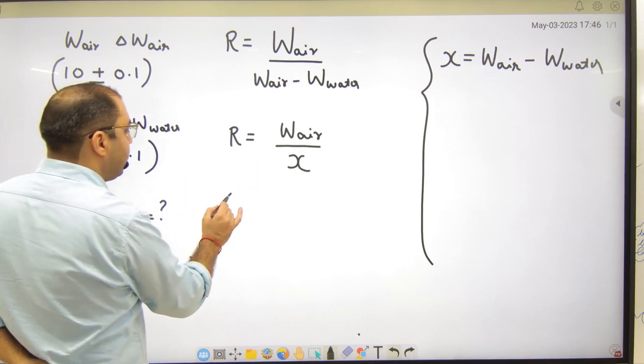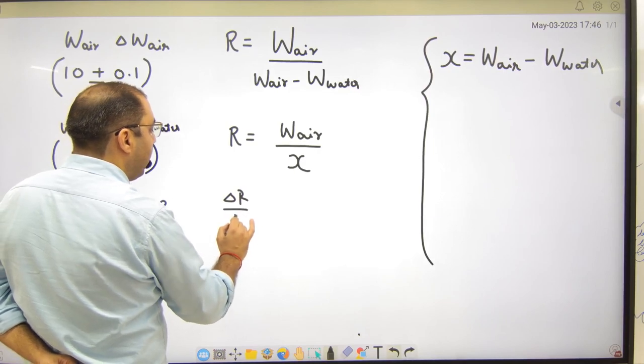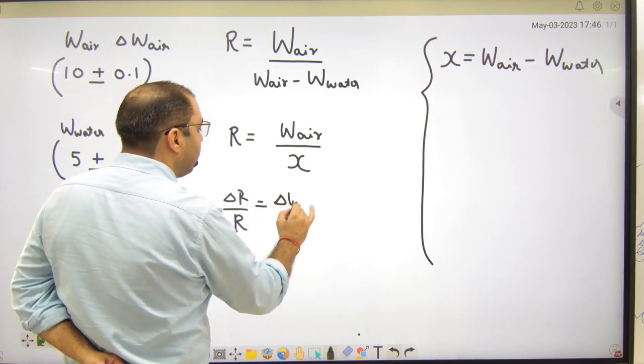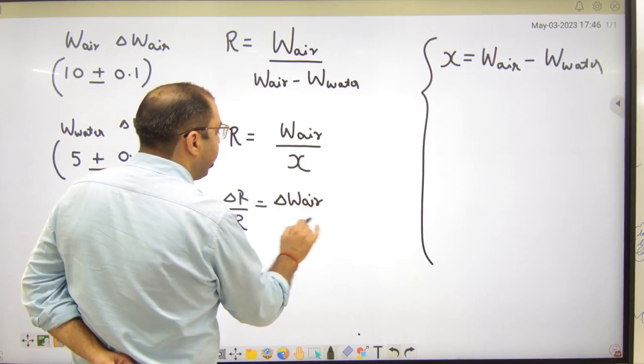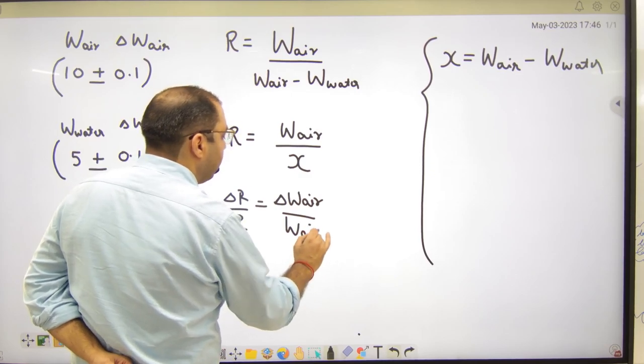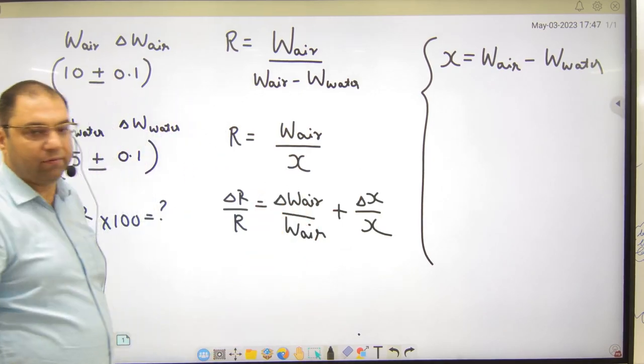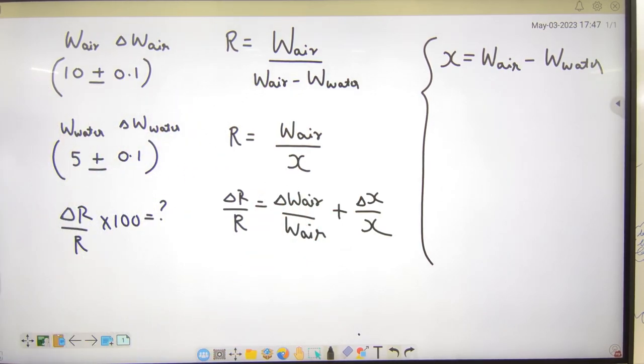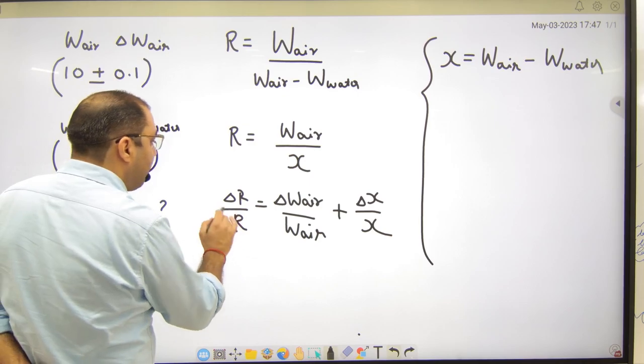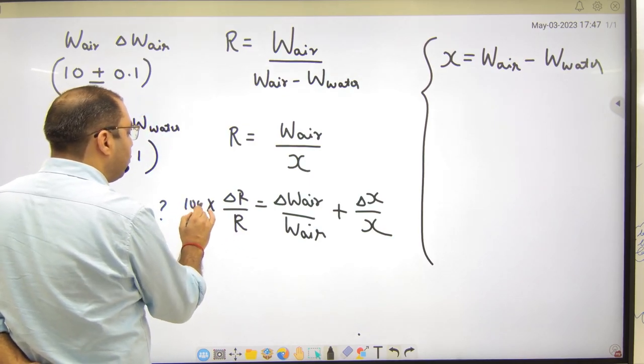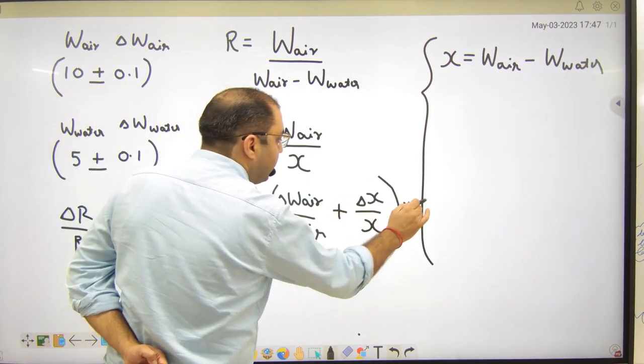Humne isko maan liya kya x hai. To ab division hai. Is mein division ka rule kya hai delta r by r delta w air by w air plus delta x by x. Kya ye point clear hai naa ta? Ab values put kar liye. Values me kyunki aapko percentage nikalna hai. To dono sides ko 100 se multiply kar lete hai.